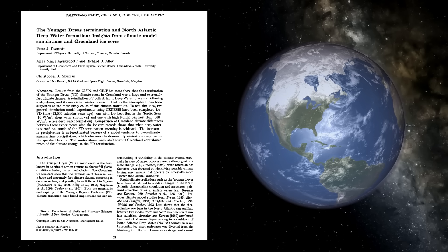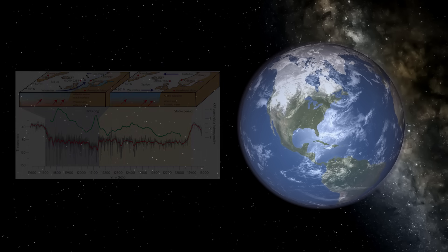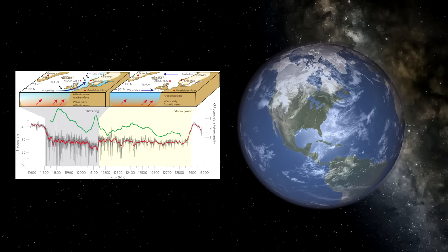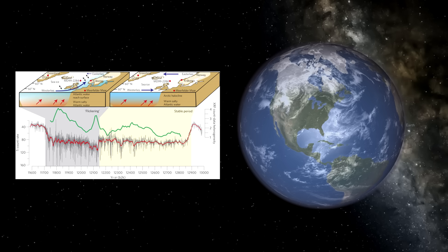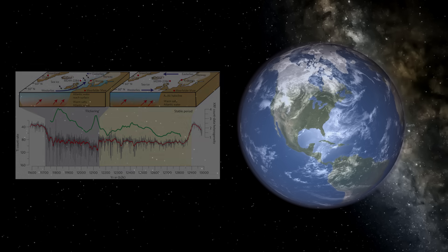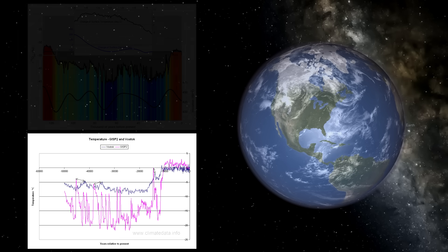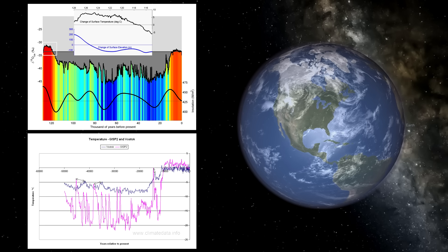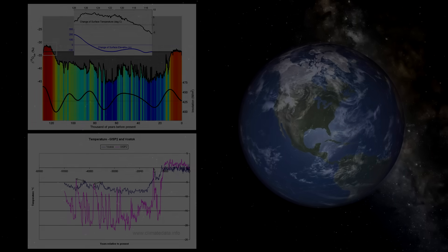The marking of the end of the Younger Dryas period was also particularly abrupt, as ice core samples show, for example, that Greenland's temperatures rose 10 degrees Celsius in only a decade, as well as various other records displaying these abrupt shifts on other continents.